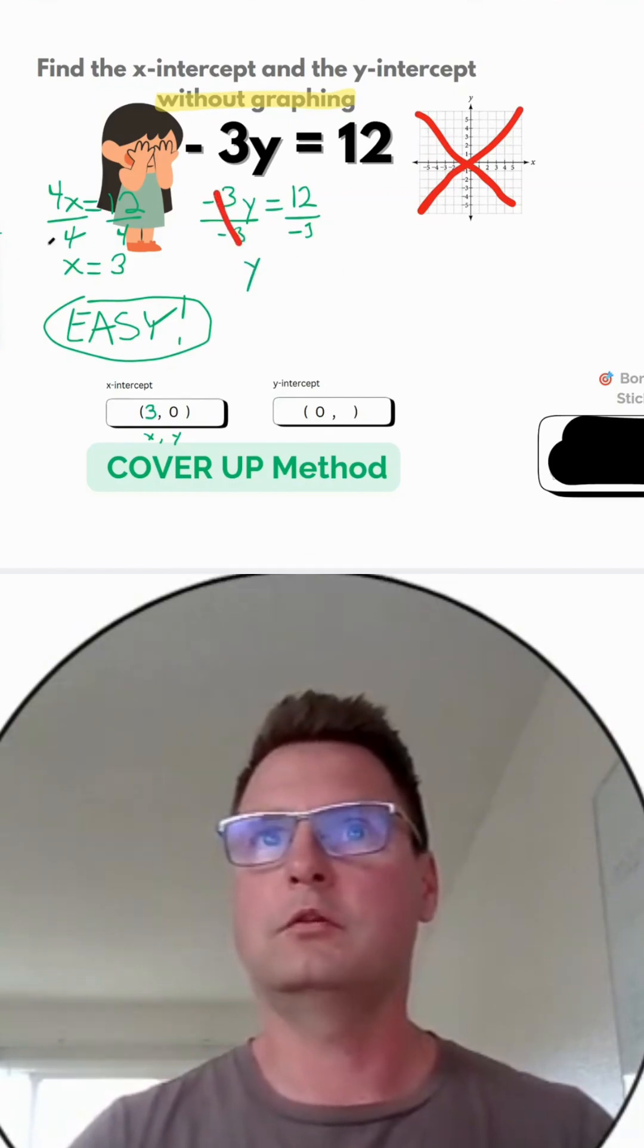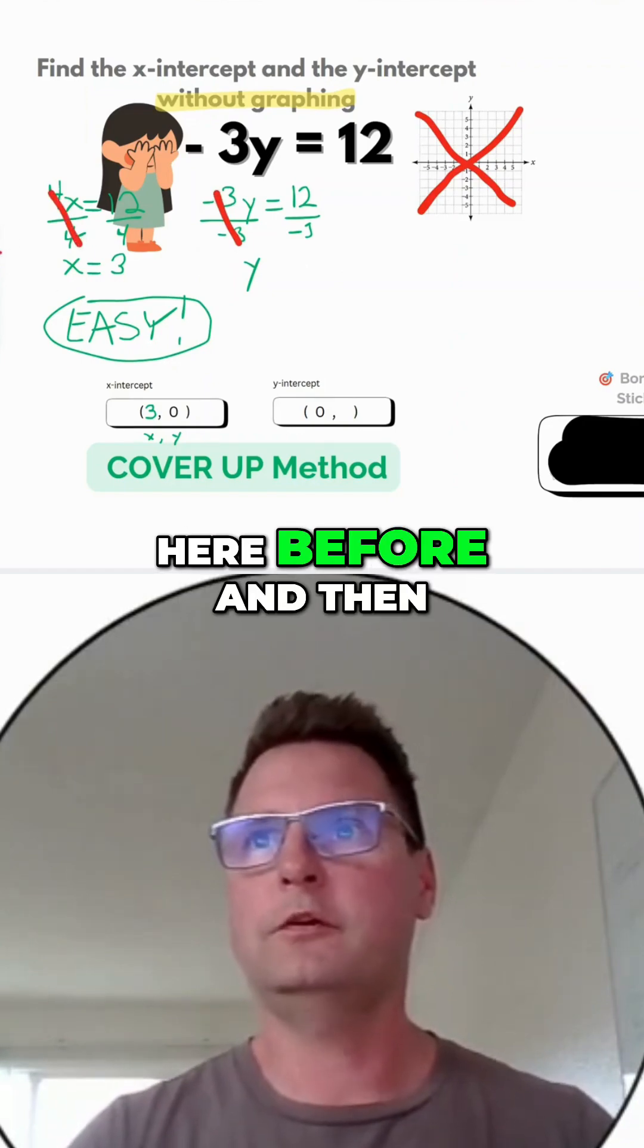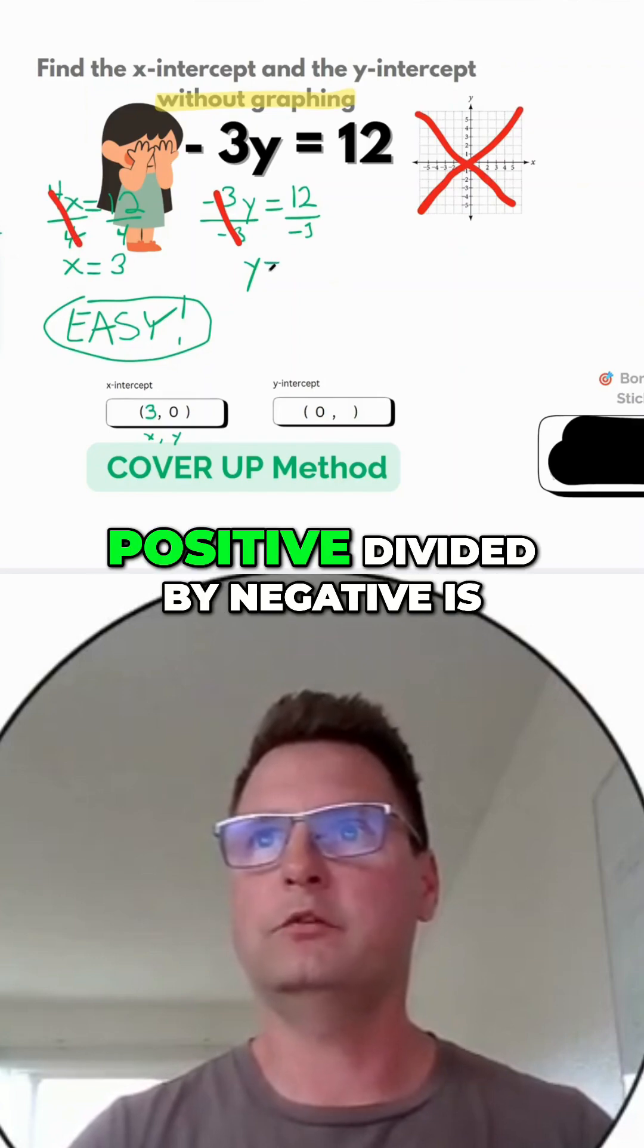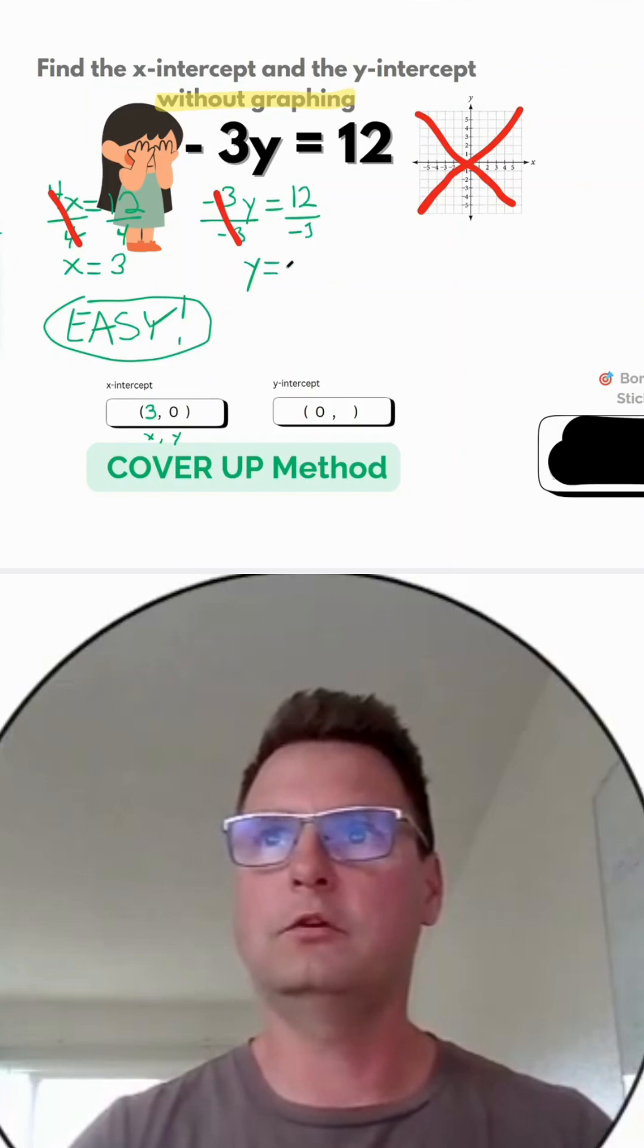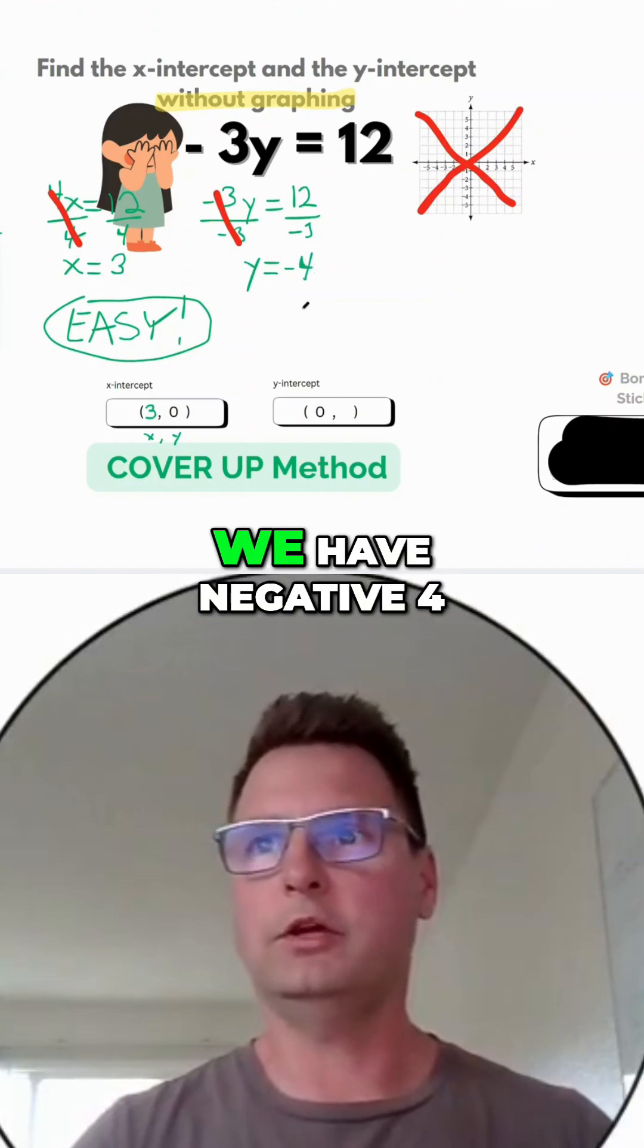Let's cancel out those 4s over here that we did before. Positive divided by negative is negative. 12 divided by 3 is 4. So if the sign is negative, we have negative 4.